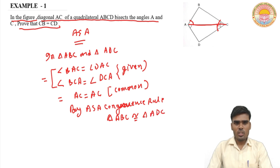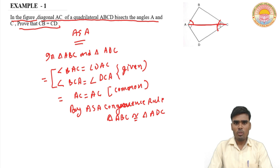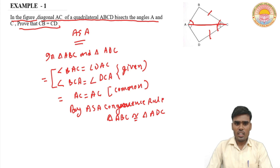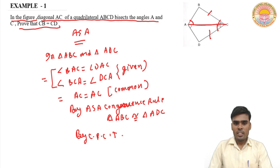अभी हमने triangle ABC और triangle ADC को congruent prove किया, लेकिन हमारा main target था कि CB is equal to CD prove करना है। तो इसके लिए हम use करेंगे CPCT — Corresponding Parts of Congruent Triangles. By CPCT, CB is equal to CD. Hence proved.